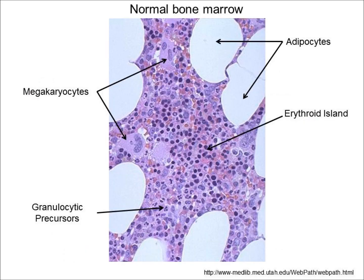This slide shows a well-preserved section of normal bone marrow. The cellularity is approximately 50%; that is, the hematopoietically active component represents about 50% of the section, while adipose tissue represents the remaining 50%. The adipocytes are simply empty spaces here because the fat has been extracted during processing. This ratio of adipose tissue to fat may or may not be normal depending upon the age of the patient — the older the individual, the greater the proportion of adipocytes.